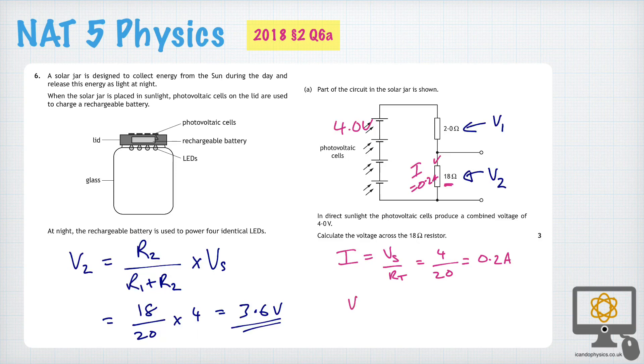So you can just use V2 is equal to I times R2. And that would be 0.2 times 18. And that's going to give you the same value as we calculated in the first method.